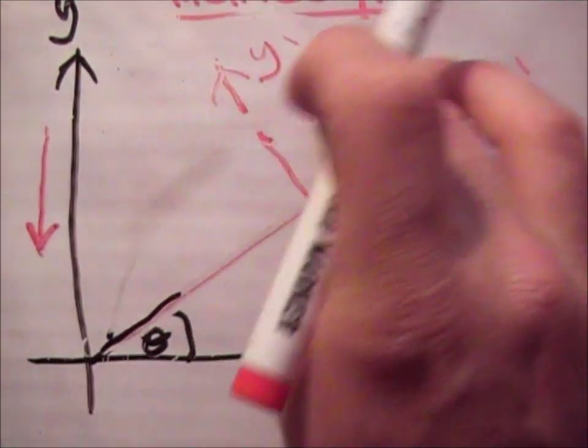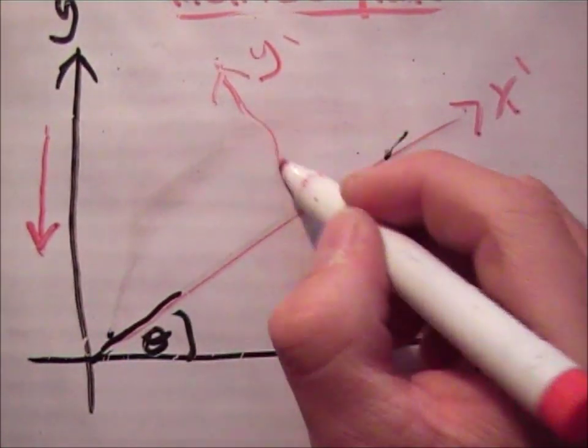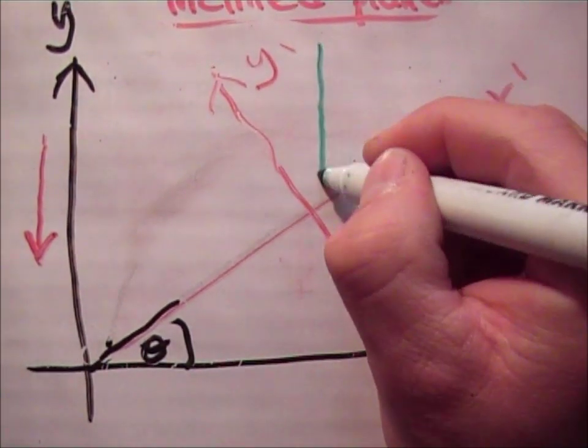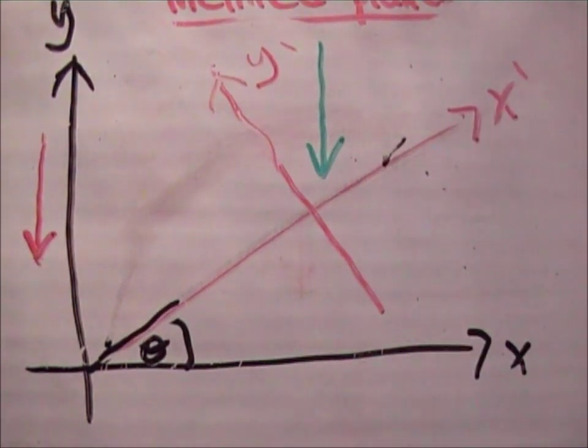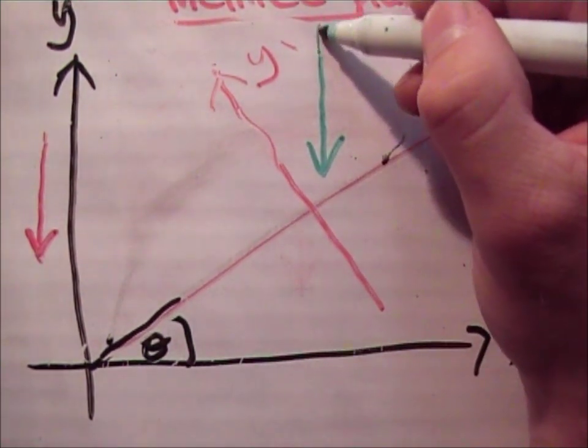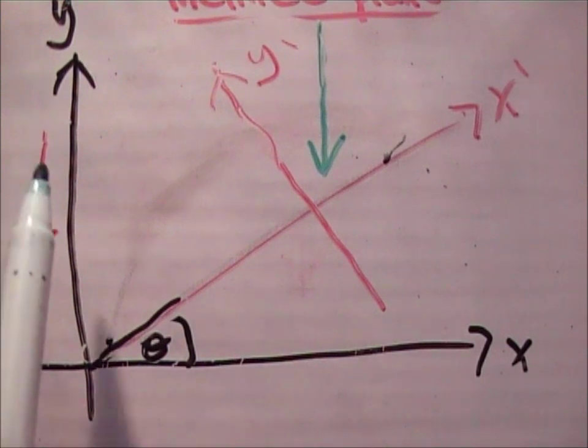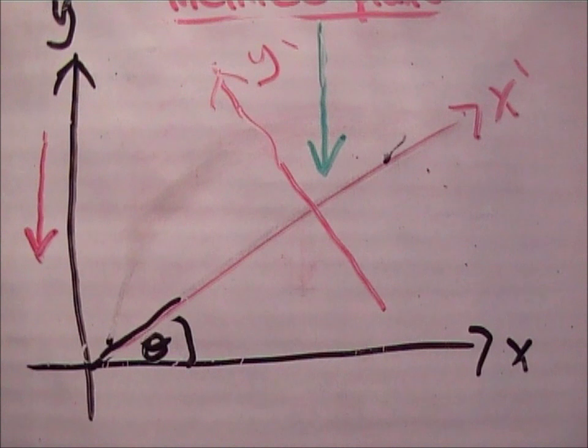If you do that, gravity no longer acts just in the negative j hat direction. It actually acts in the x prime y prime plane. So gravity will act this direction. And look it acts in the x prime y prime plane. So we need to be able to resolve this vector into its component unit vectors. We can analyze the motion normally using this xy axis and then we wouldn't need to resolve it. But it is easier to analyze projectiles on inclined planes by rotating your plane.